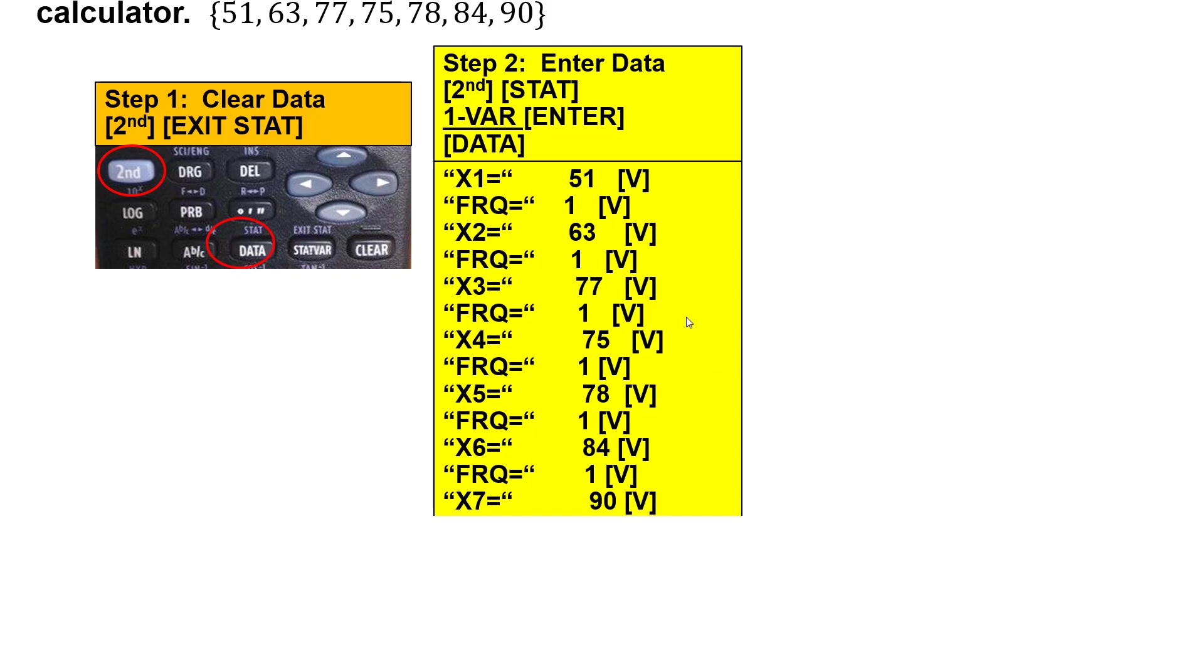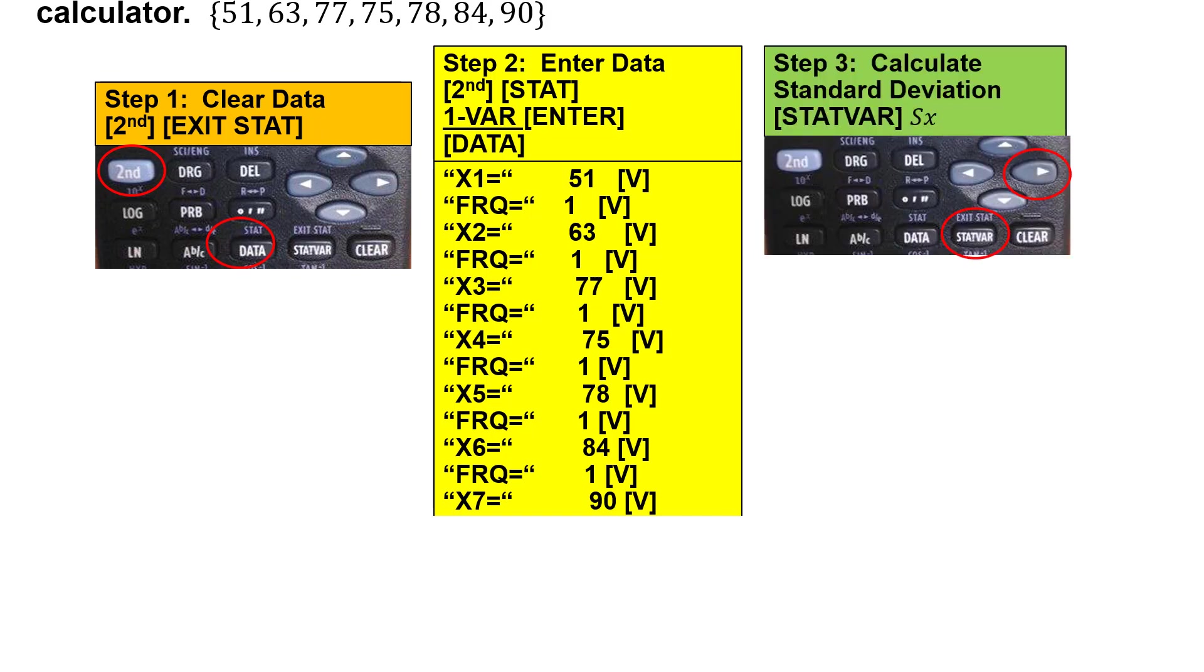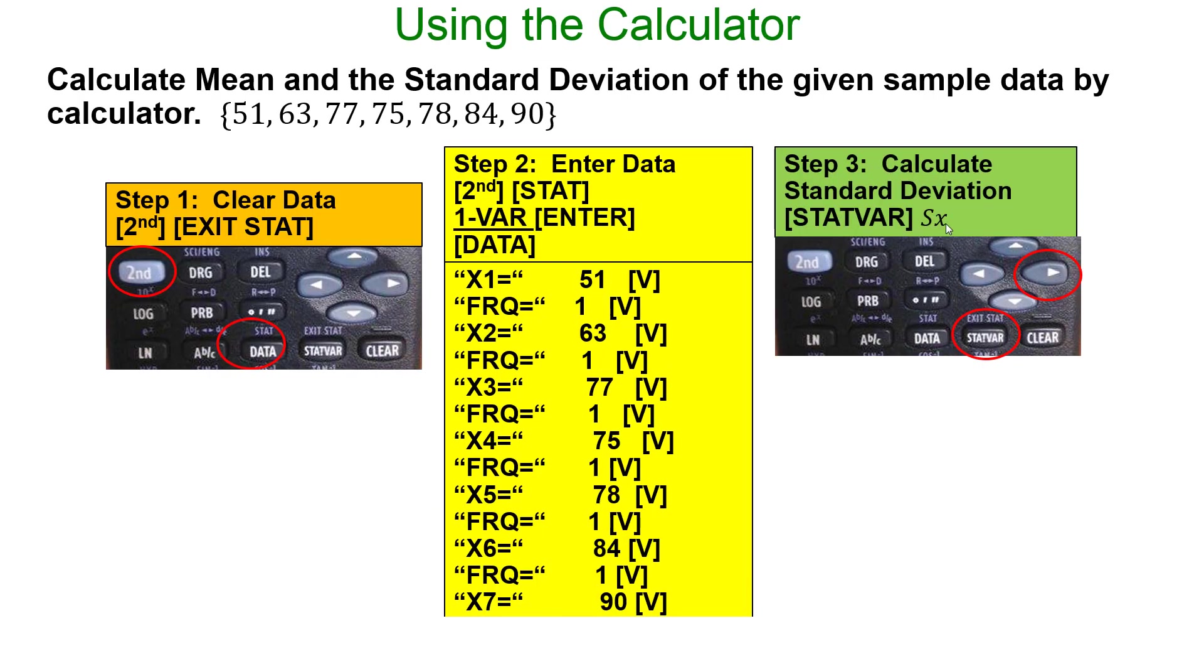Okay once your data values are entered to calculate the standard deviation you're going to select stat bar just like we did to find the mean and then arrow over to Sx. Sx the standard deviation of the data, the sample standard deviation of the data Sx. And what do you see there? It's the same value we found before right 13.1.